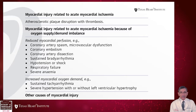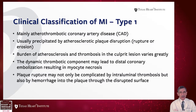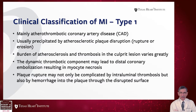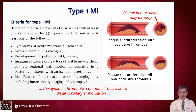Myocardial injury related to acute myocardial ischemia due to oxygen supply-demand imbalance may involve spasm, embolism, dissection, bradyarrhythmia, hypotension or shock, respiratory failure, or severe anemia. Summing up the clinical classification: Type 1 is mainly about the atherothrombotic coronary artery disease form of infarction, usually precipitated by atherosclerotic plaque disruption. The burden of atherosclerosis and thrombosis in the culprit lesion may vary greatly. The dynamic thrombotic component may lead to distal coronary embolization resulting in myocyte necrosis, and plaque rupture may be complicated by hemorrhage into the plaque through the disrupted surface.